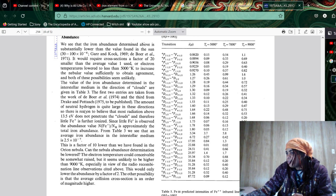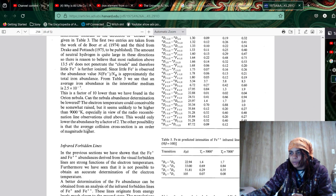And the third from Drake and Postage. The amount of neutral hydrogen is quite large in these directions, so there is a reason to believe that most radiation above 13.5 EV does not penetrate the clouds. Therefore little Fe is further ionized. Since little Fe is observed in abundance value, it's approximately the total iron abundance. From Table 3, we see... Yeah, whatever. Can the nebula abundance determination be lowered? That's a good question.